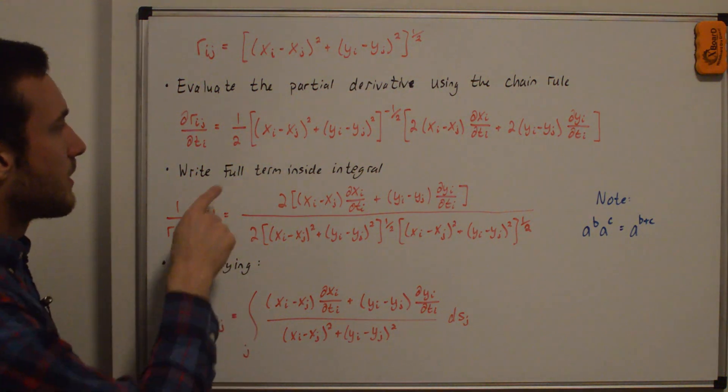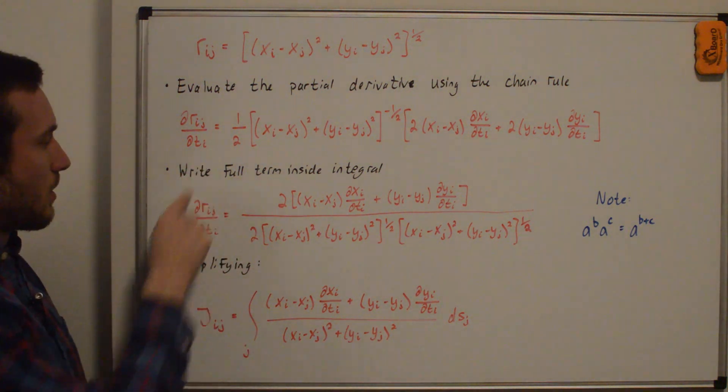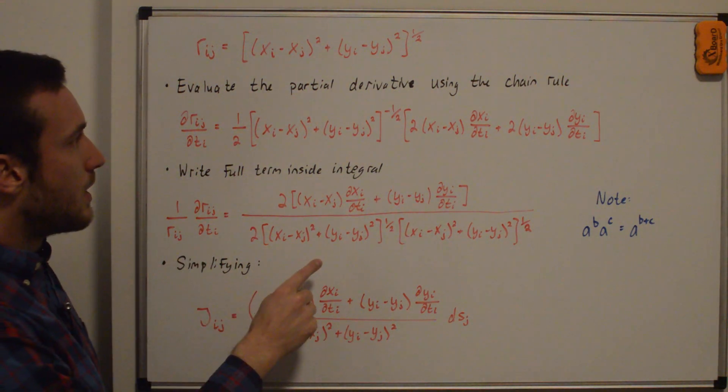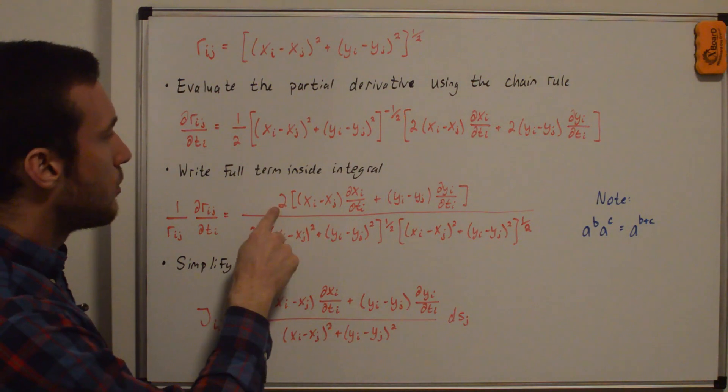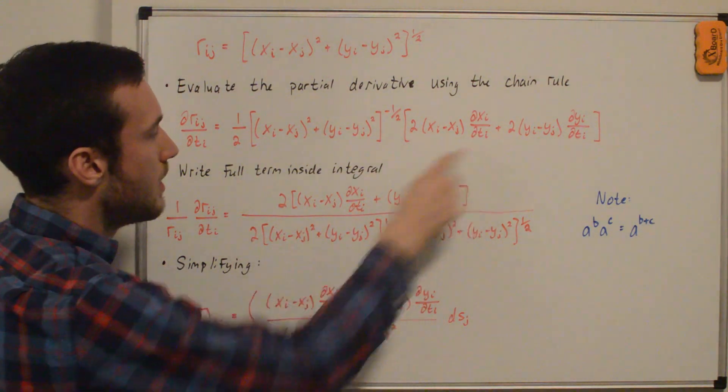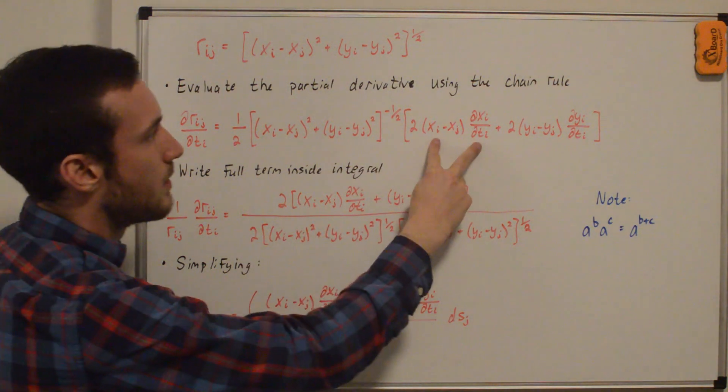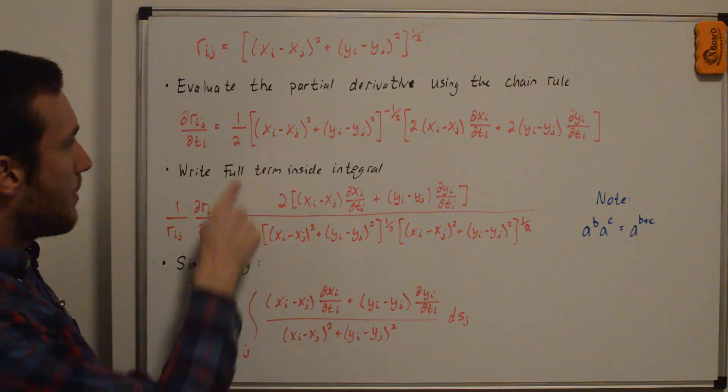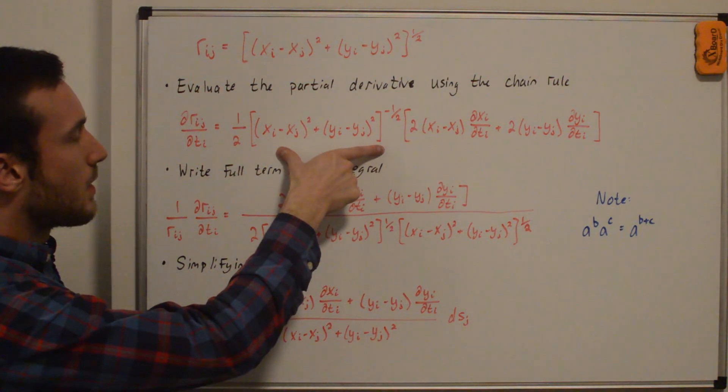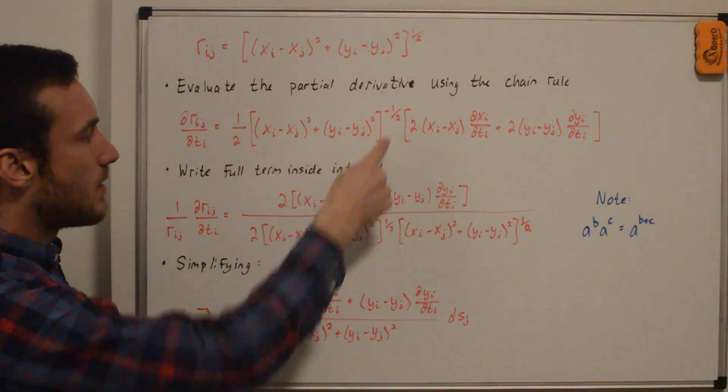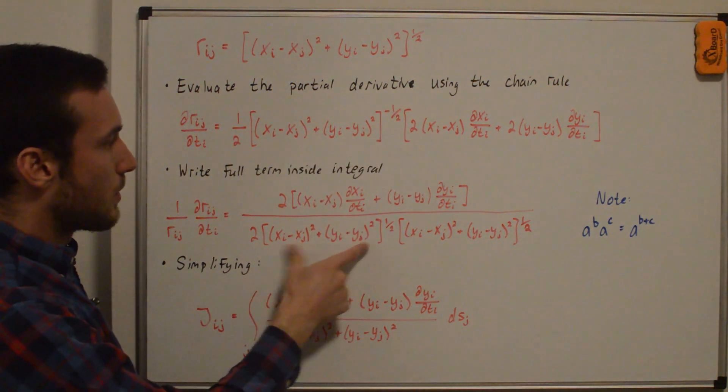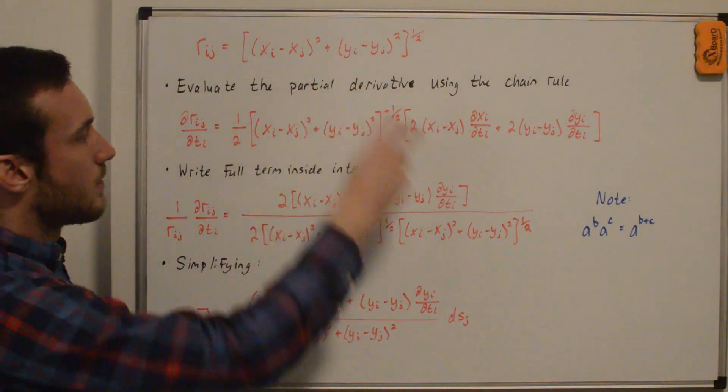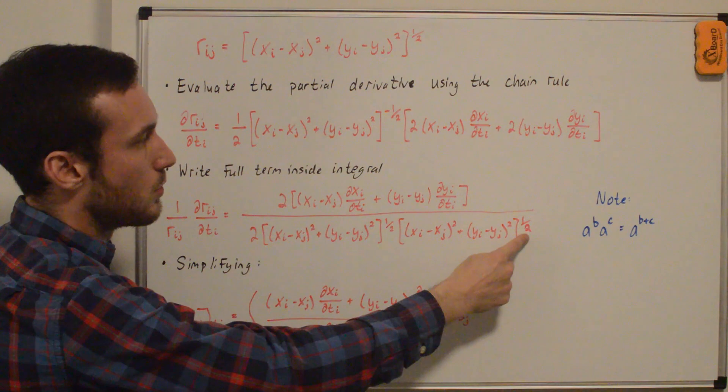And so we can write the full term inside the integral, which is just this, with the addition of the one over rij, as the following. So we have in the numerator, we have two factored out from here. So we have two times whatever was in here. And then we also have on the denominator, the one half comes down, this whole thing can come down and we'll negate the power. So we have this whole thing to the one half. And the one over rij, that's this thing up here. We'll just bring that down. And that's still to a positive one half.